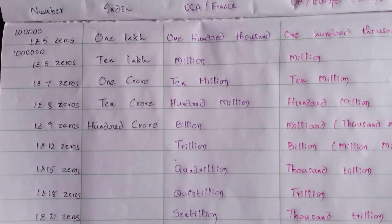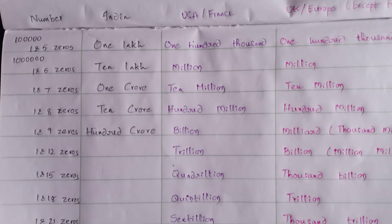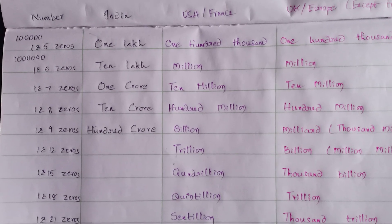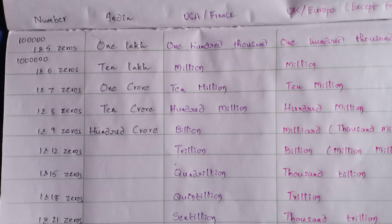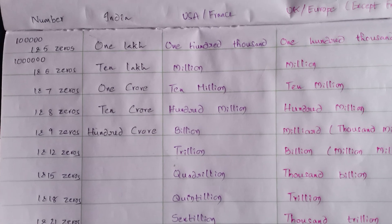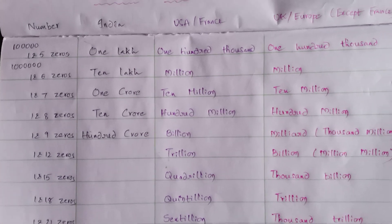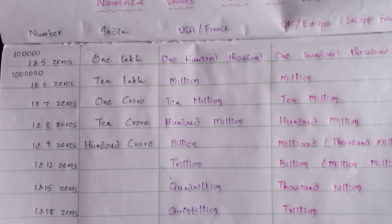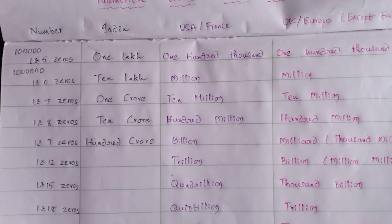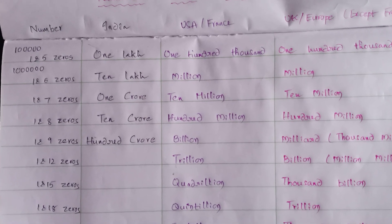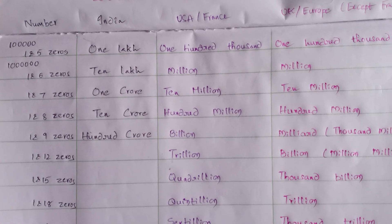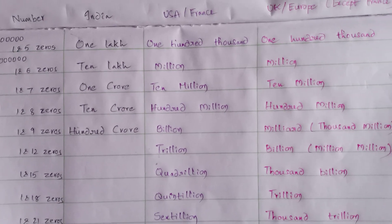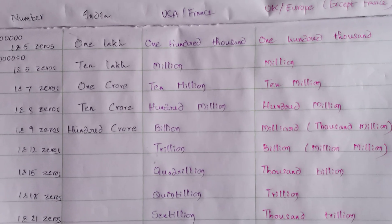1 followed by 9 zeros — in India, 100 crore. In USA and France, it is known as 1 billion. In UK and Europe, 1 and 9 zeros is known as milliard, that is 1,000 million.